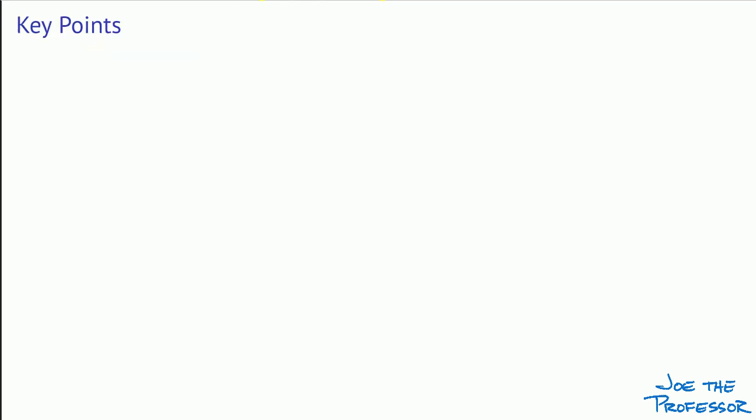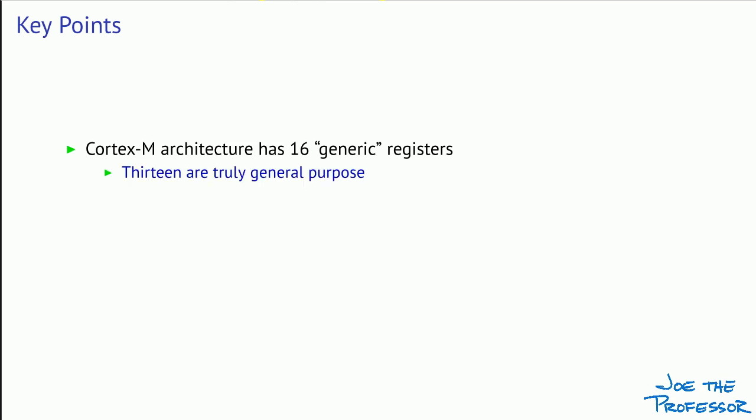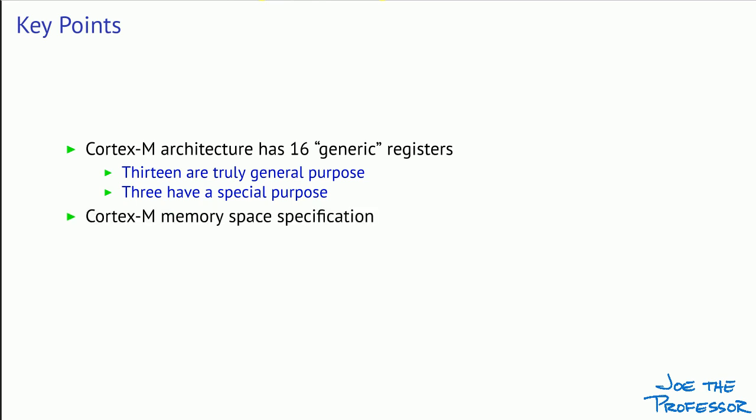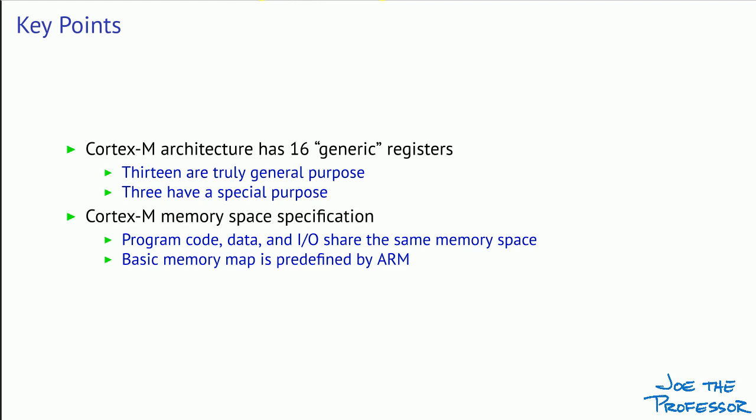To summarize the key points: the Cortex-M architecture has 16 generic registers, but only 13 are truly general-purpose registers for scratchpad memory. Three have a special purpose — registers 13, 14, and 15 are the stack pointer, the link register, and the program counter. ARM has specified the Cortex-M memory space, and program code, data, and I/O share that same memory space. Because the memory map is predefined by ARM, it's much easier to develop applications for one ARM processor and port them to another. That's the basic Cortex-M instruction set architecture.